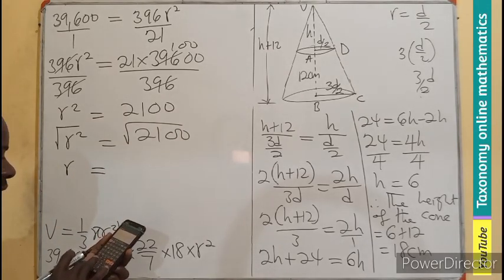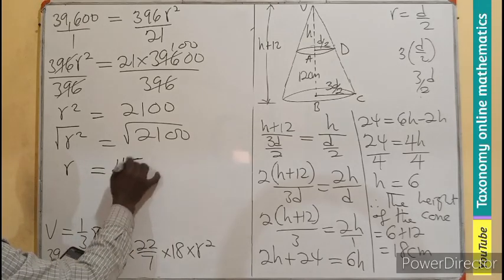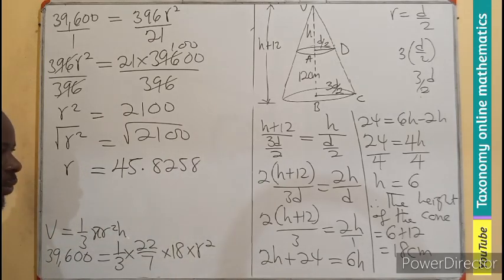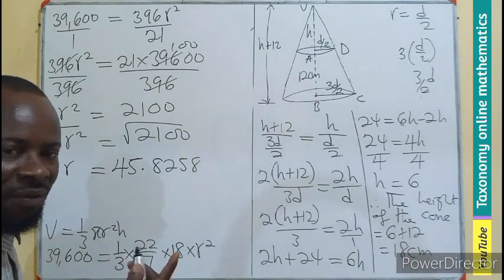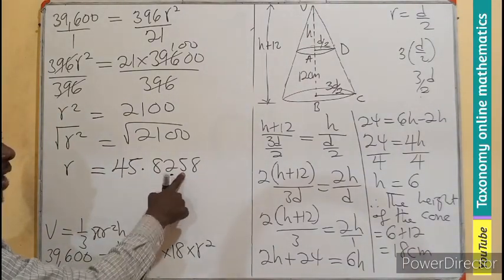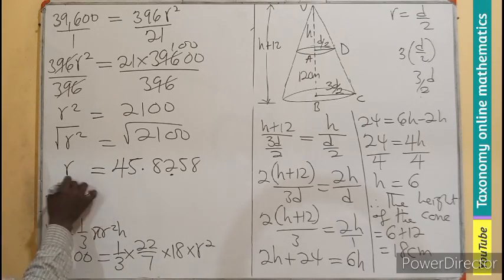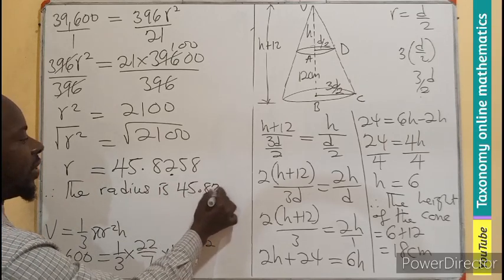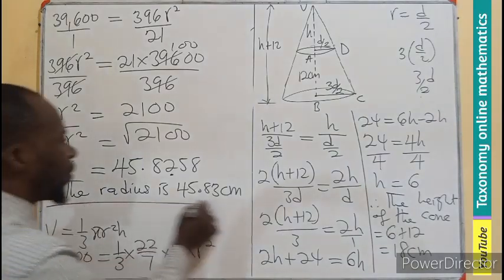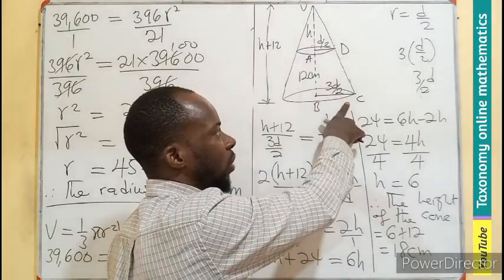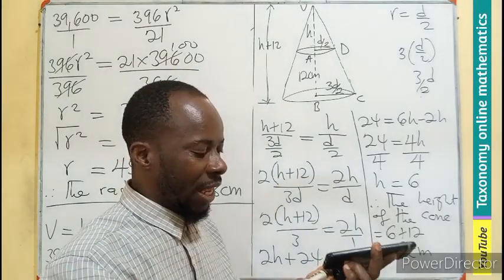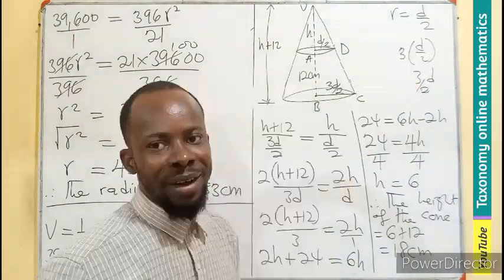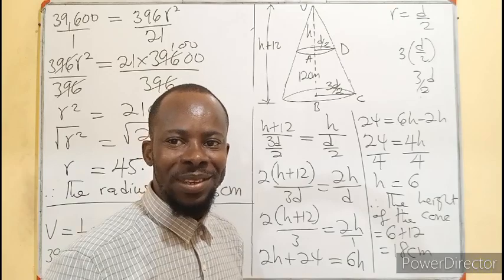The question requires our answer to four significant figures. One, two, three, four. This is five, so we round up. Therefore, the radius is 45.83 centimeters. Thank you for watching. Like, share, and comment. Bye-bye.